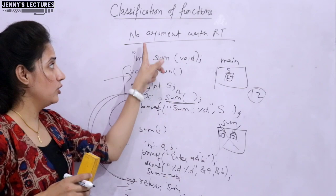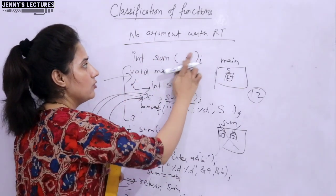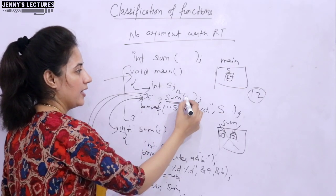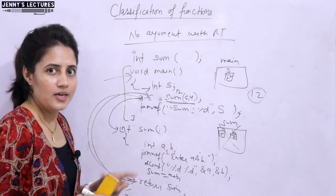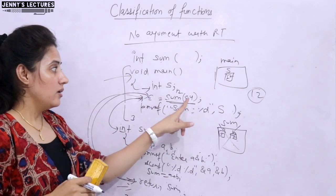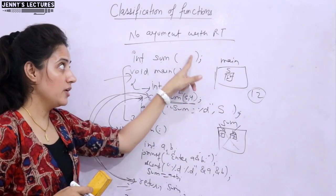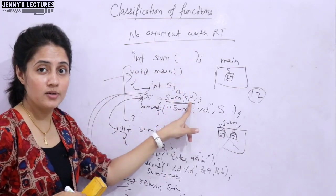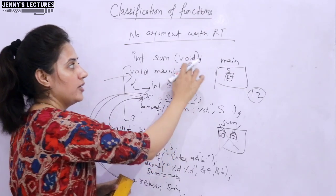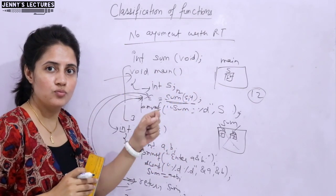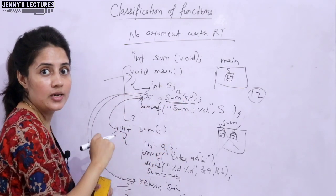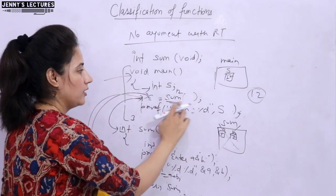I hope you understand the difference of this category: function with no argument but with return type. Also, if you do not write void in the parameter, and you pass arguments like 5 and 4 in the function call, it will not give an error, but logically it should. So it is better to write void to guarantee an error if you accidentally pass arguments.